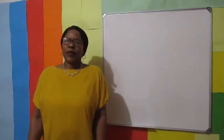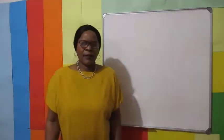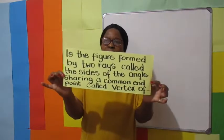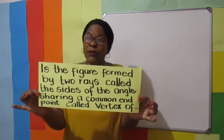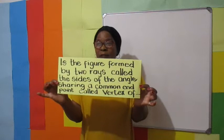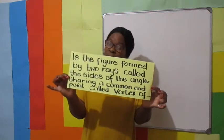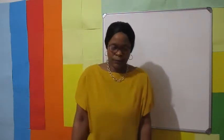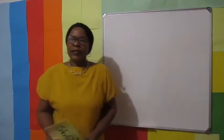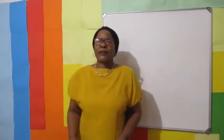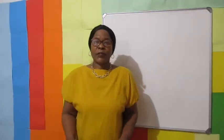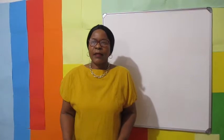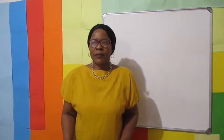Describe an angle. What is an angle? An angle is the figure formed by two rays, called the sides of the angle, sharing a common endpoint called the vertex of the angle. First, let's look at different types of angles at different measurements.